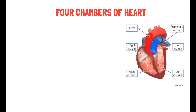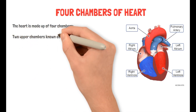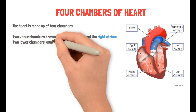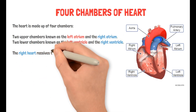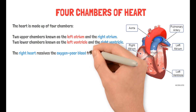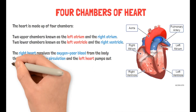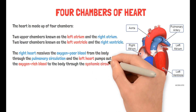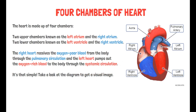Now that we are done with the cardiac muscle, it is time for the four chambers of the heart. The heart is made up of four chambers: two upper chambers known as the left atrium and the right atrium, and two lower chambers known as the left ventricle and the right ventricle. The right heart receives oxygen-poor blood from the body through the pulmonary circulation, and the left heart pumps out oxygen-rich blood to the body through the systemic circulation.